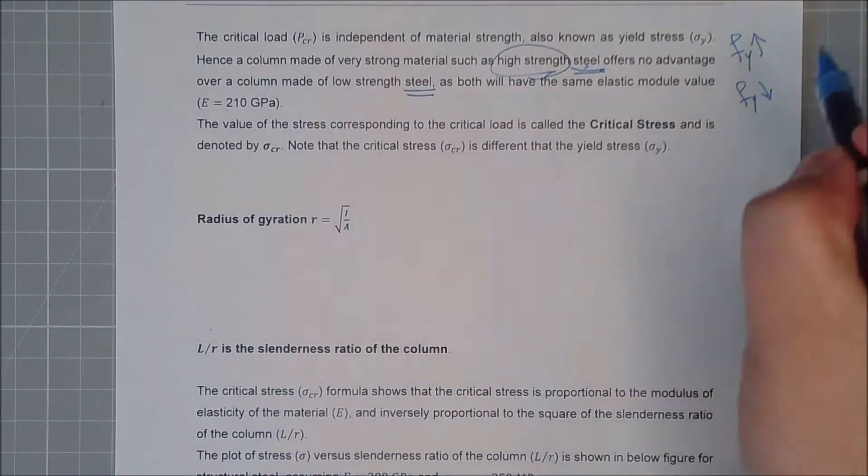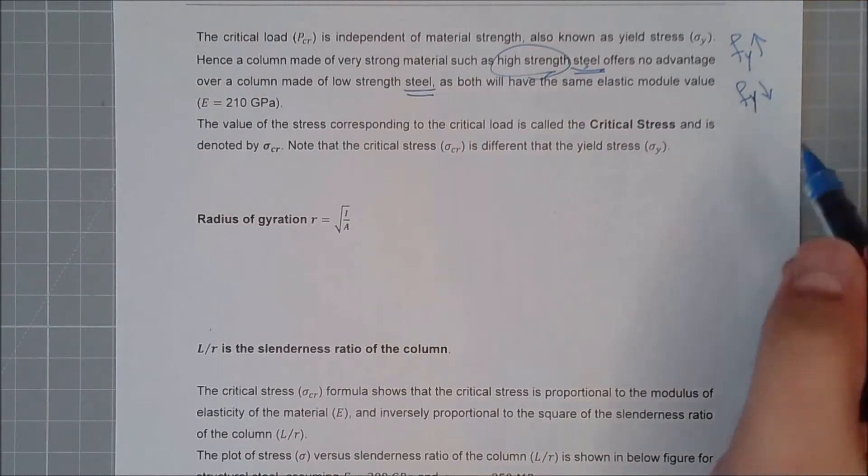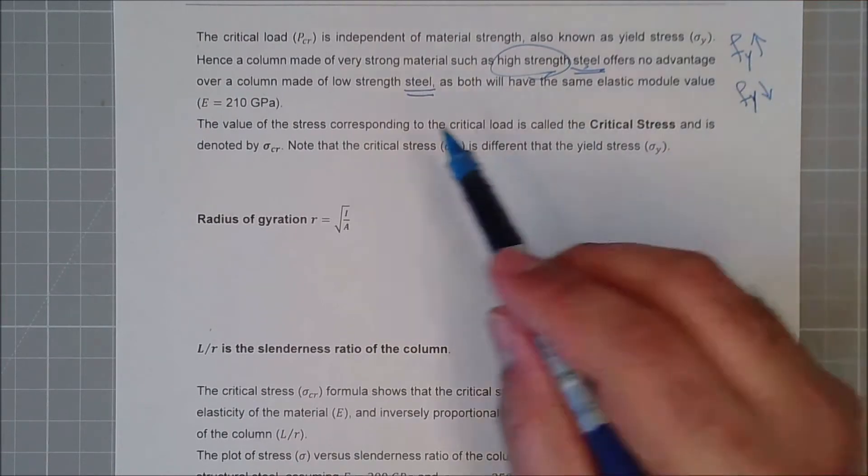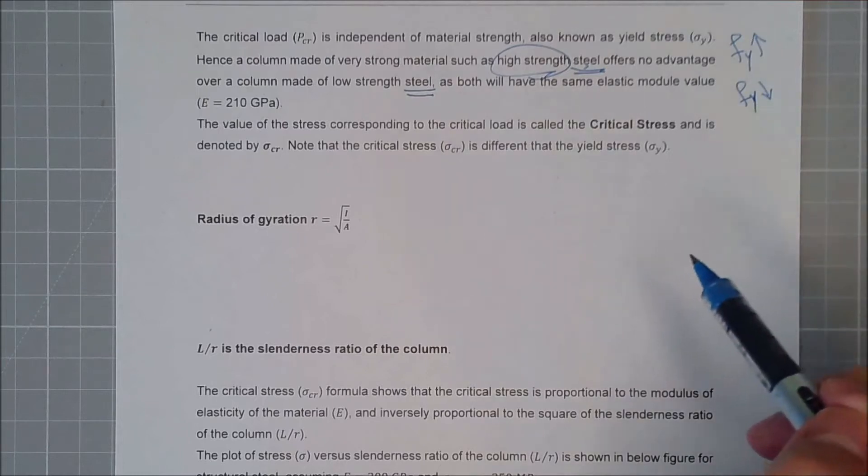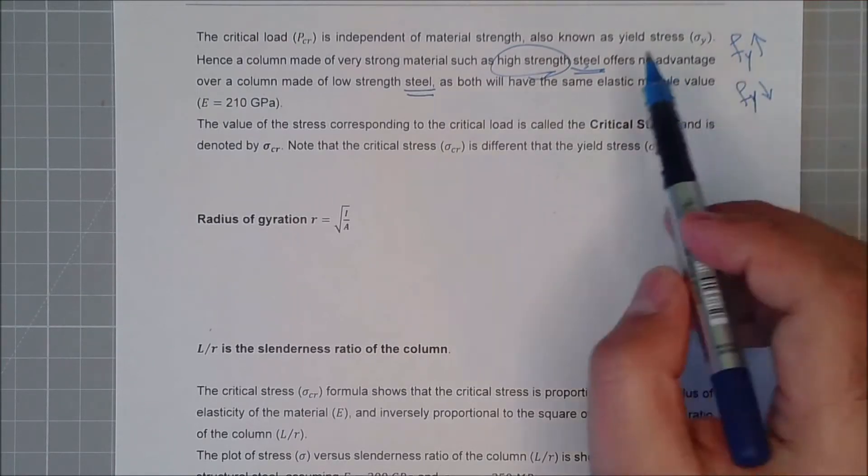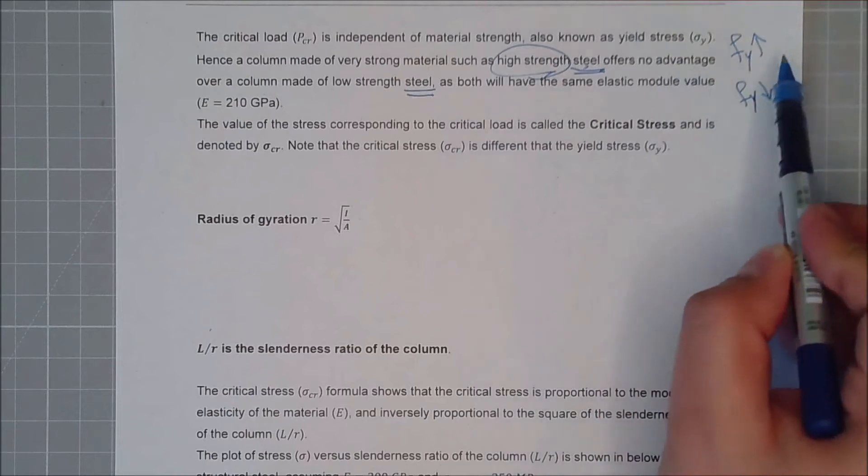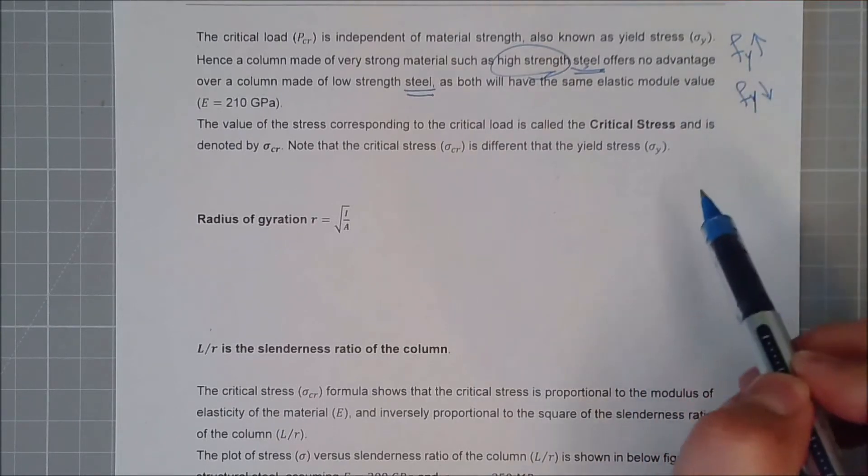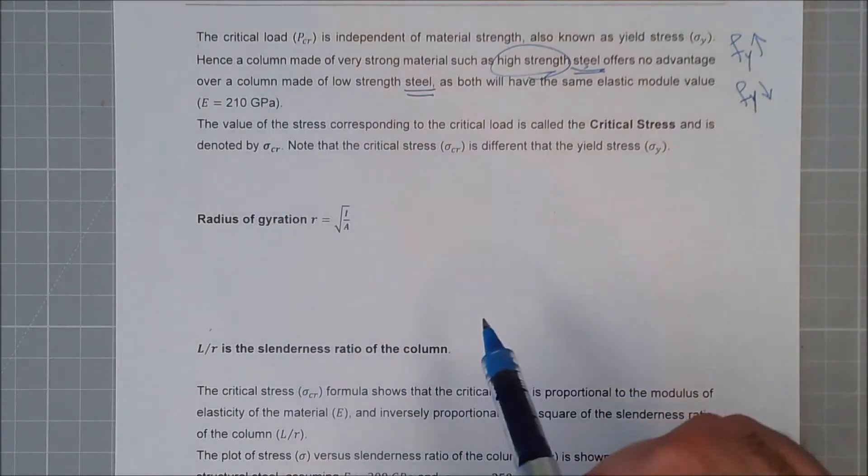Both of them will suffer because really it relates to the cross-section, to its material, which both of them are the same, as well as its length. So even if you have a high strain steel, that means that you will reach yielding point much later, but it doesn't mean that you will not have buckling in it.